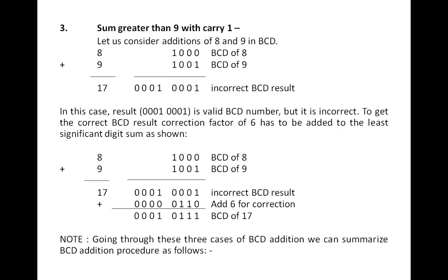The third case is when adding two numbers gives a sum greater than nine and a carry is also generated. For example, adding eight and nine gives 17. BCD of eight is 1000 and BCD of nine is 1001. Adding these gives 10001 with a carry generated. This is again an incorrect BCD result because the sum is more than nine.